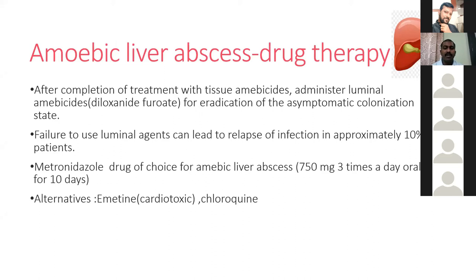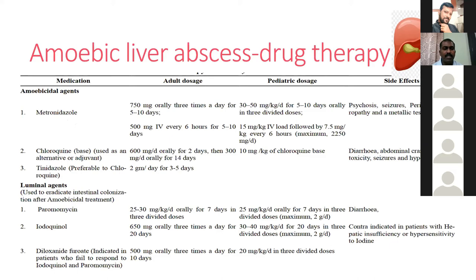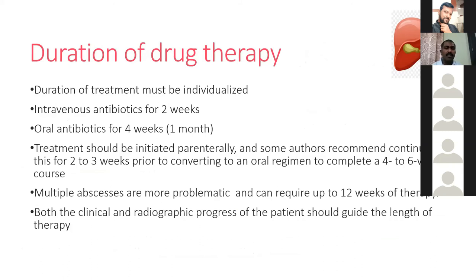Metronidazole is used at 750 mg orally three times a day for 10 days in adults; the pediatric dose is 30-50 mg/kg body weight for 5-10 days. Alternative drugs include chloroquine or tinidazole. Luminal amoebicides such as paromomycin, iodoquinol, or diloxanide furoate should be used alongside metronidazole to kill the parasite. The standard treatment duration is IV antibiotics for the initial two weeks followed by oral antibiotics for four weeks, though this varies and some authors recommend IV therapy for up to three to four weeks.